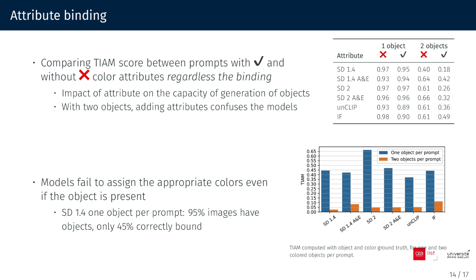Next, the attribute binding results. We start by computing the TIAM score by only considering catastrophic neglect, even if there are attributes in the prompts. We want to see the impact of adding attributes on the generation capacity of objects. When we introduce attributes to the objects, we observe a notable impact on the score, particularly with two objects and attributes. Attributes confuse the models.